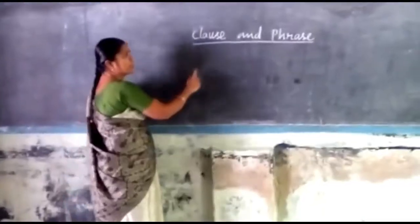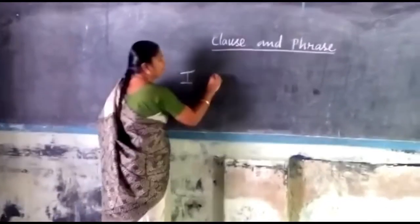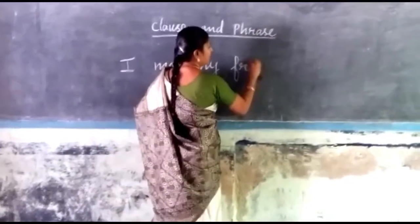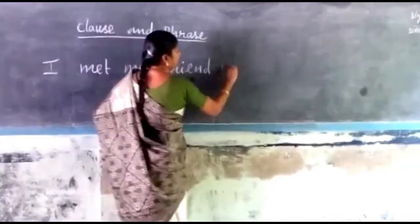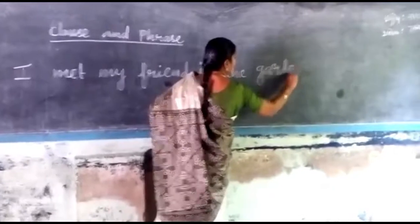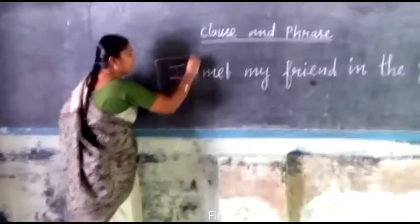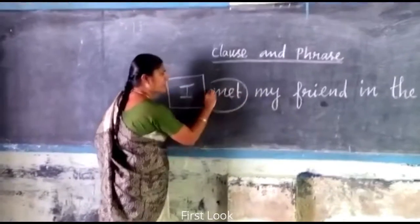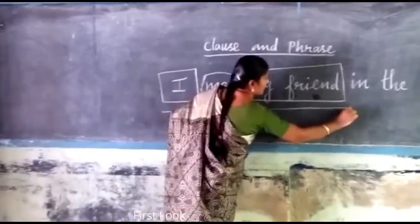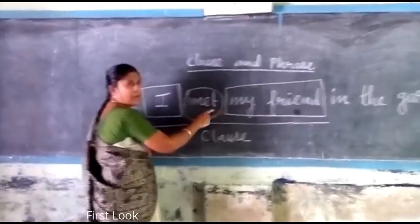Good morning to all. Today we are seeing the difference between clause and phrase. Here, 'I met my friend in the garden.' We will see the difference between clause and phrase. Here, 'I' is a subject, 'met' is a verb, 'my friend' is an object. It is a clause. 'I met my friend' has subject, verb, and an object.